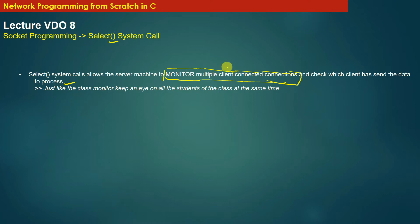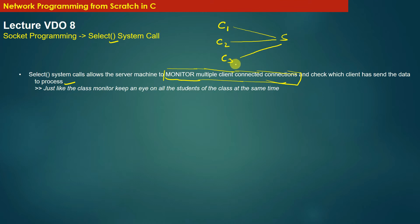Suppose there is a client C1, a client C2, and a client C3. All these clients are already connected to the server S. At any point of time, C1 can send data to the server S, C2 can send data to the server S, or C3 can send data to the server S. Using the select system call, the server S monitors the connections of C1, C2, and C3 at the same time.